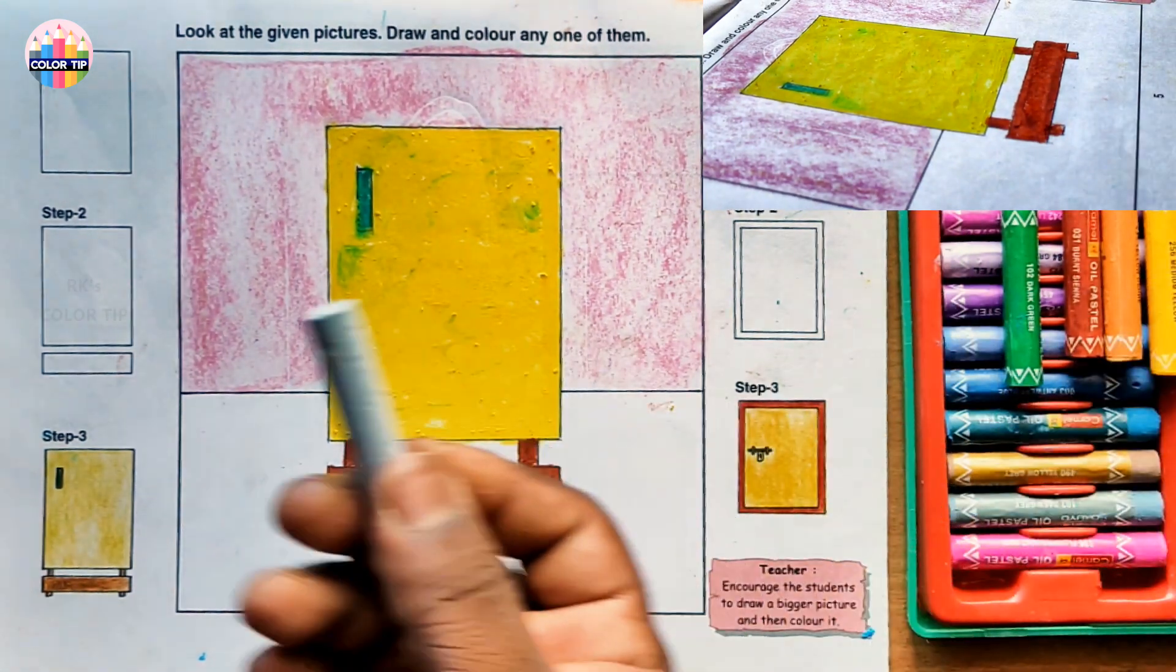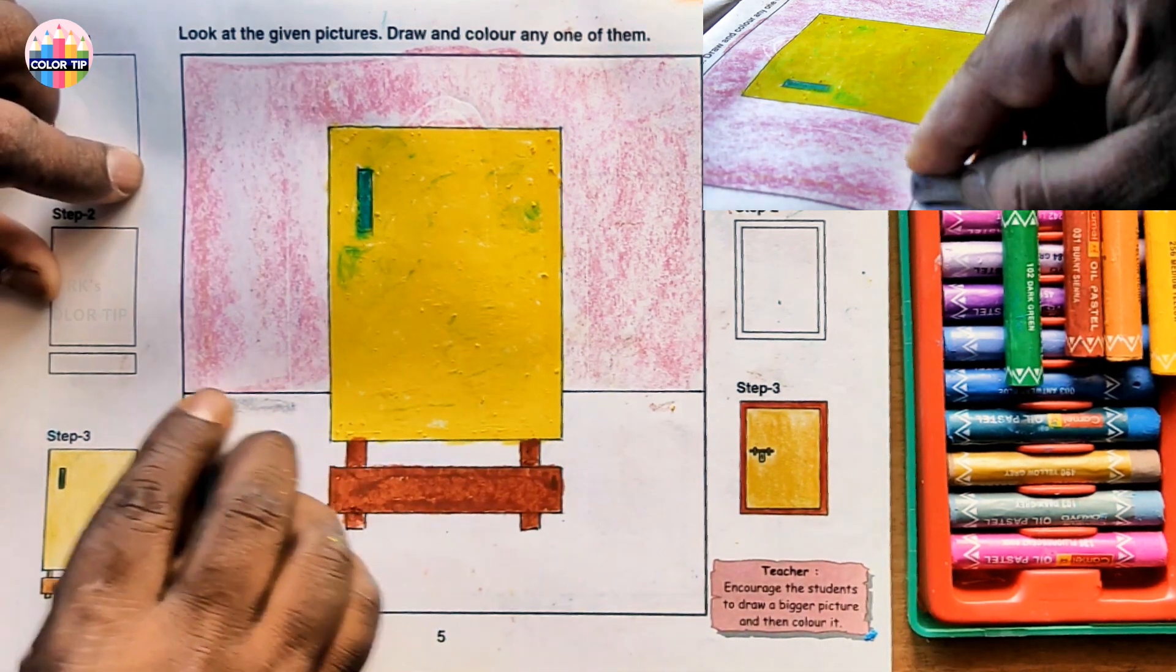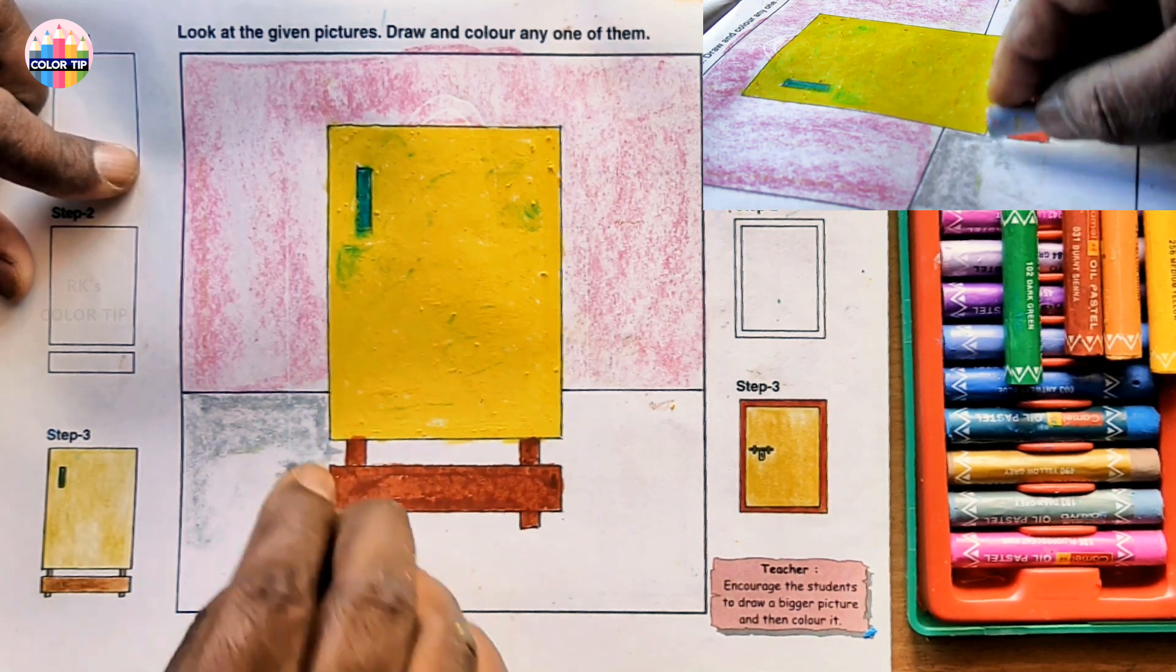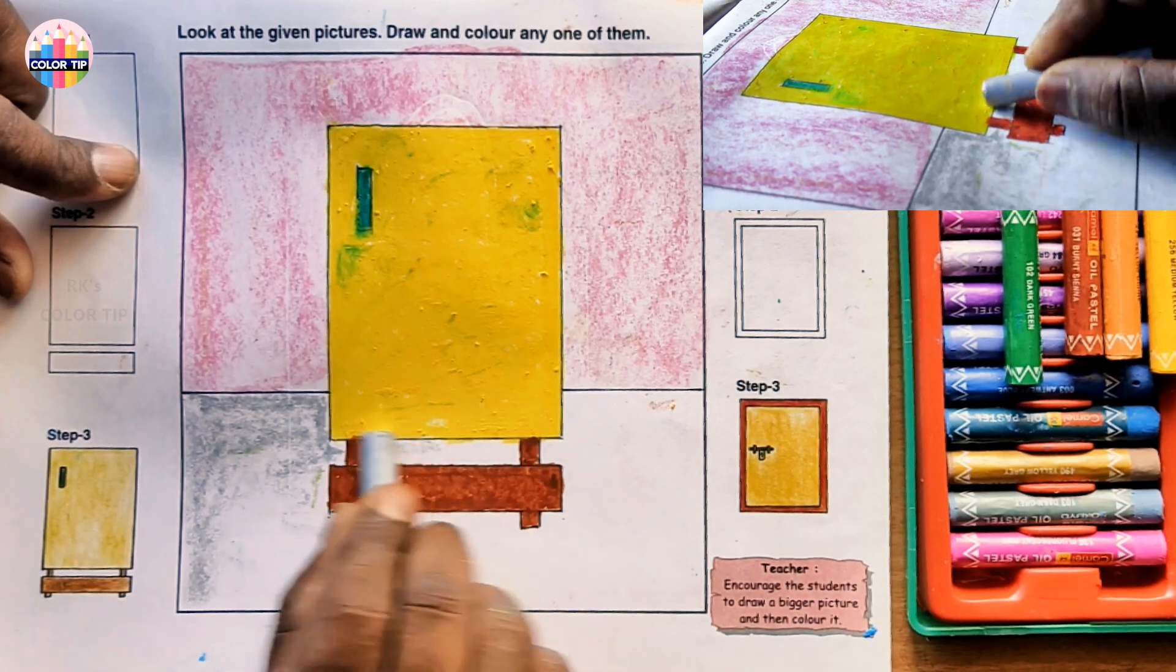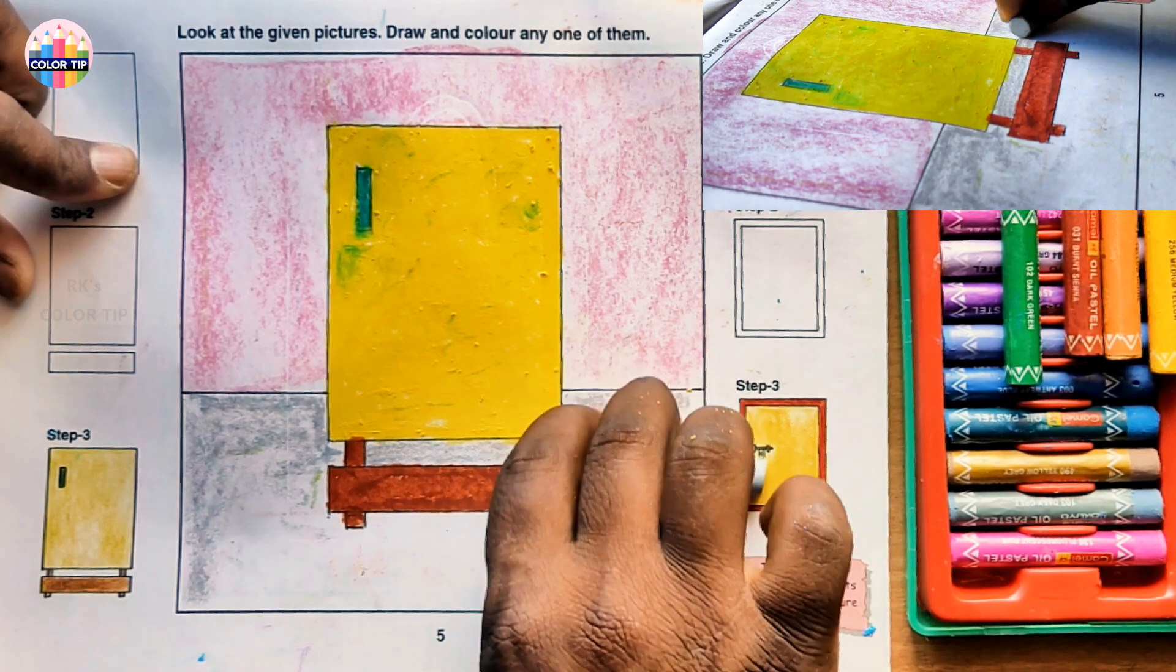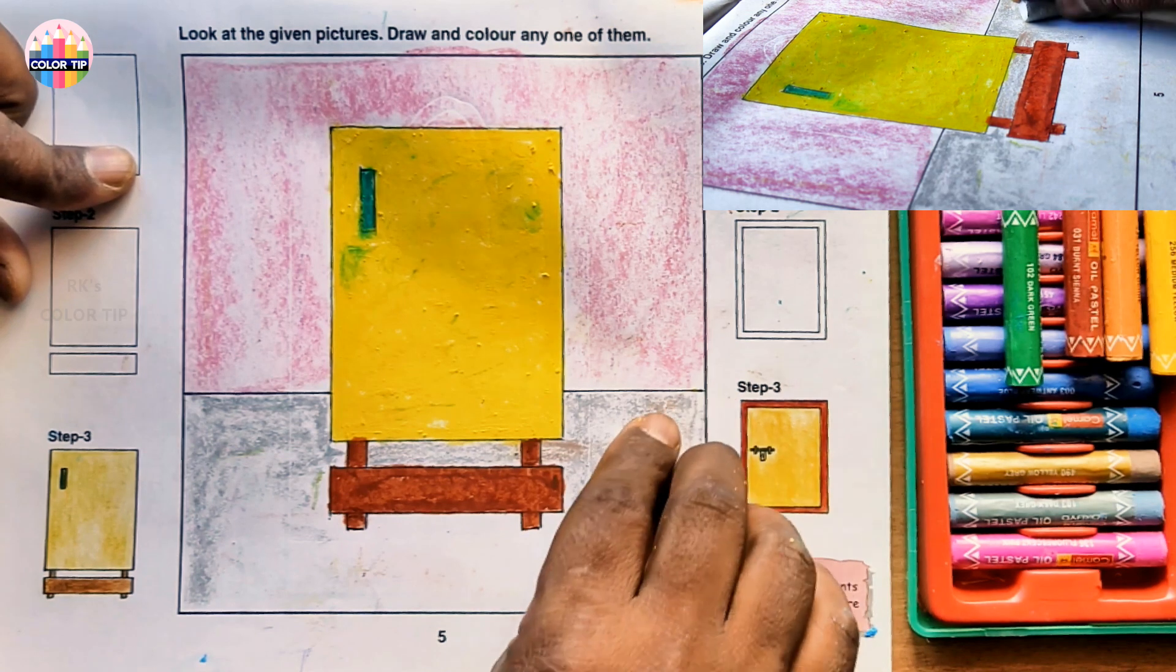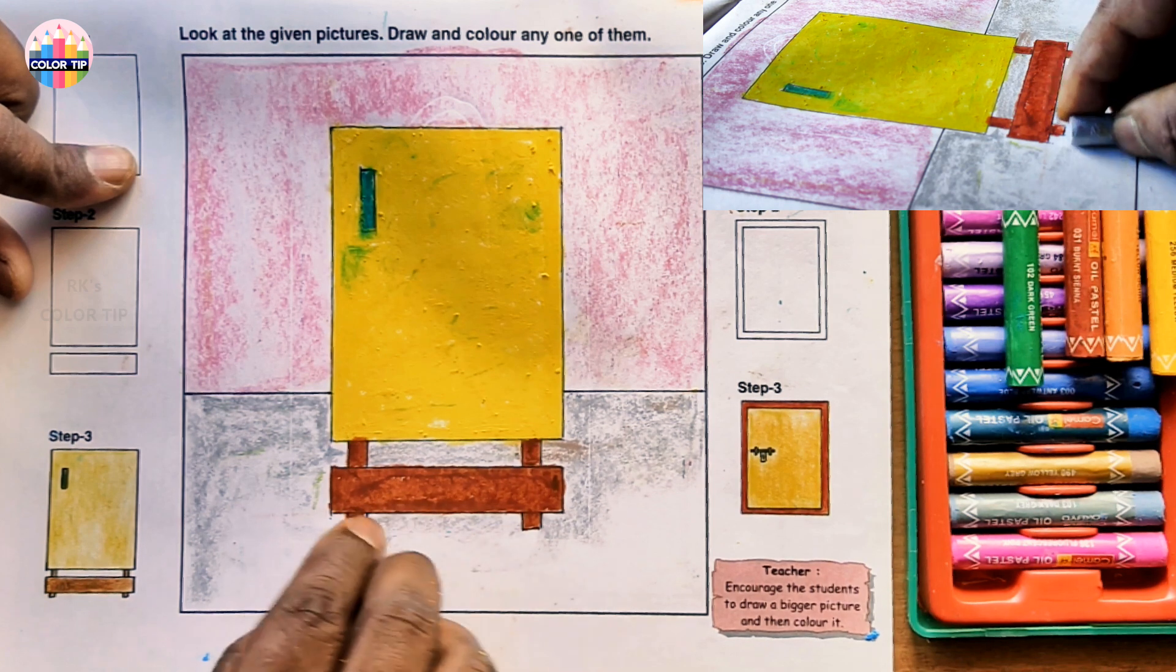Let's take a gray color. Don't let your backgrounds dominate this picture, so color with light colors and color a bit lightly than the object coloring.